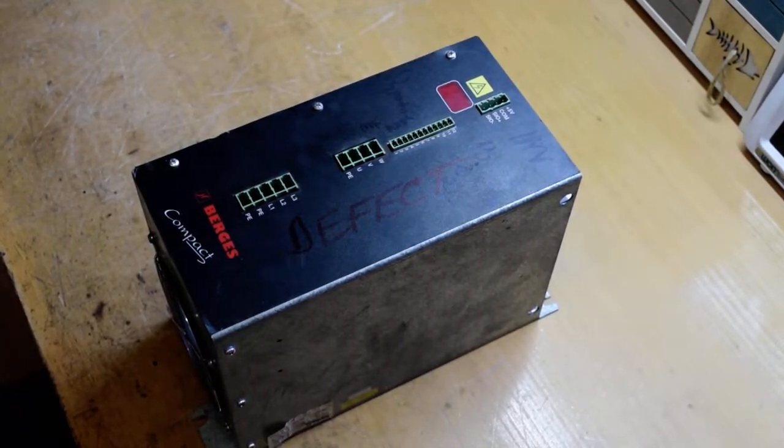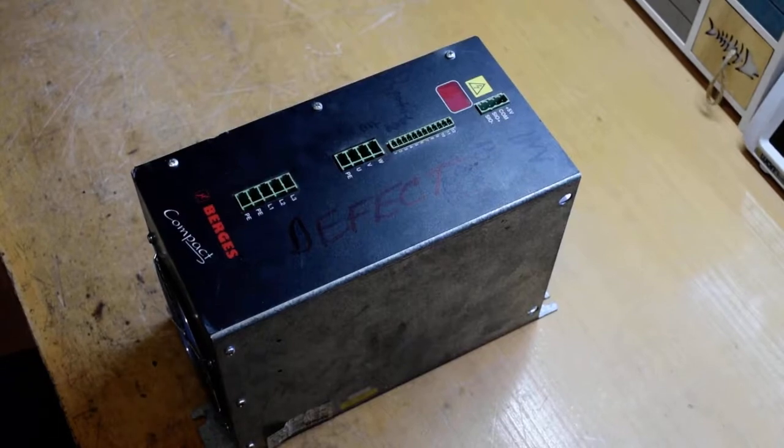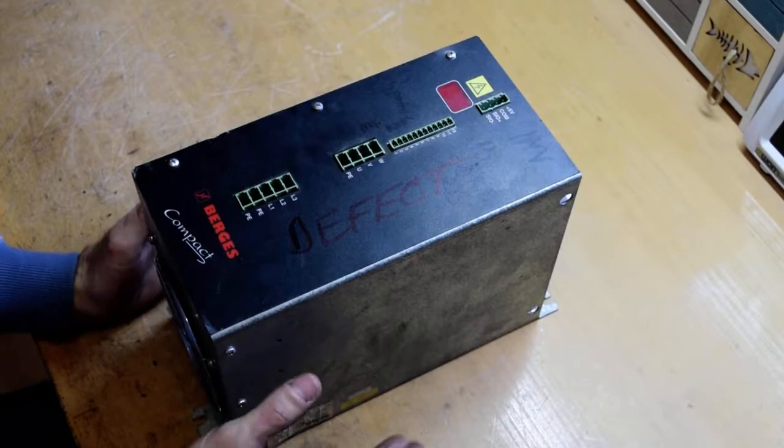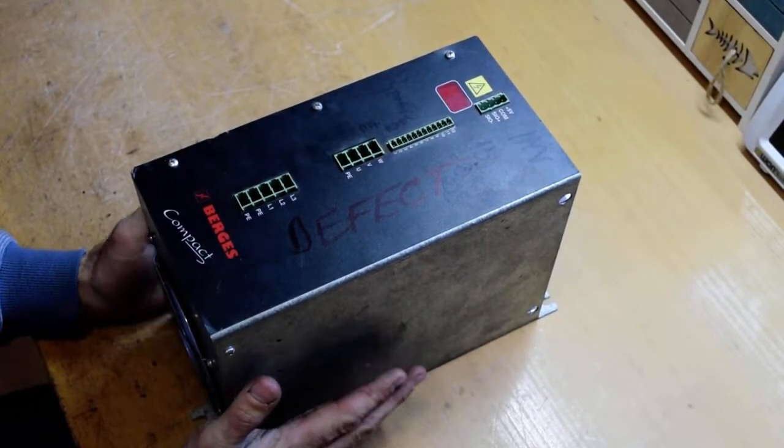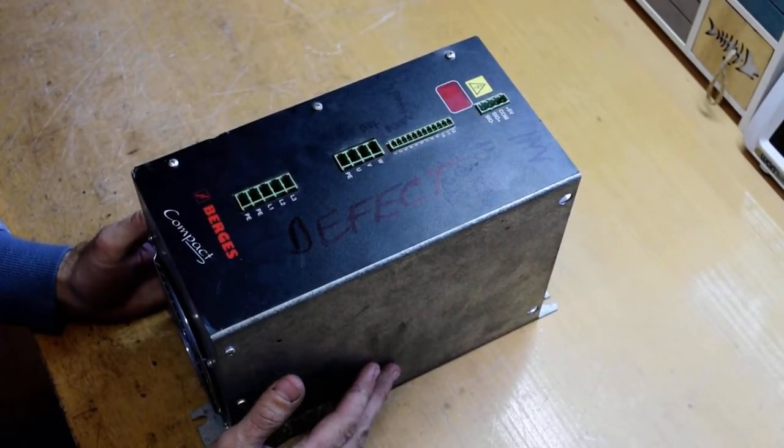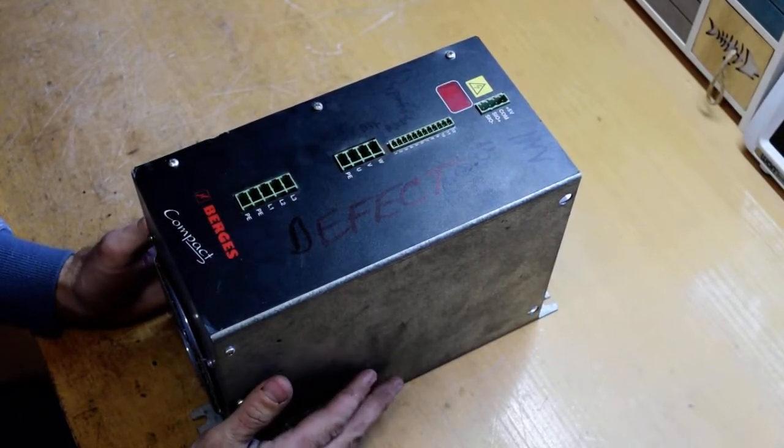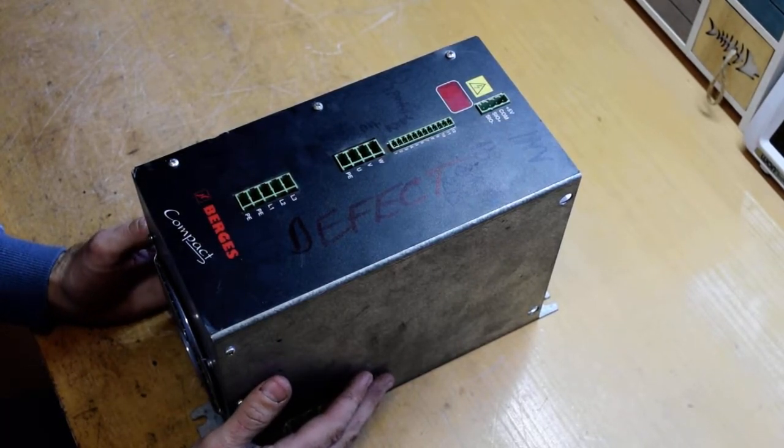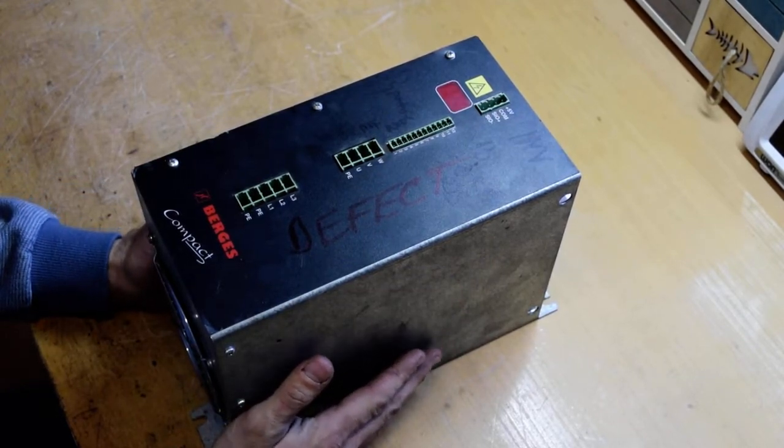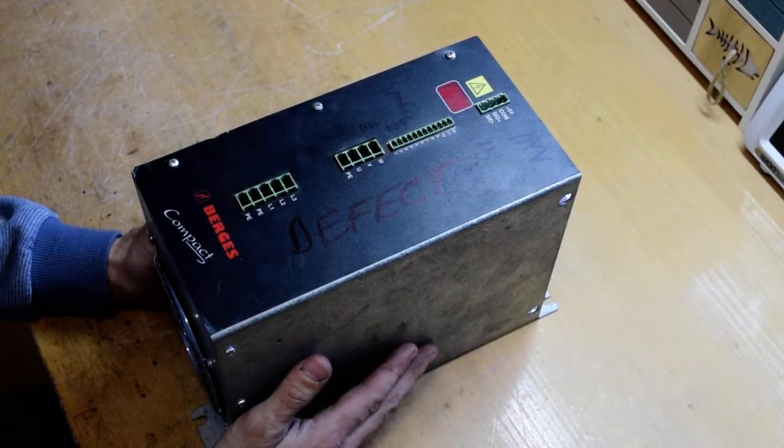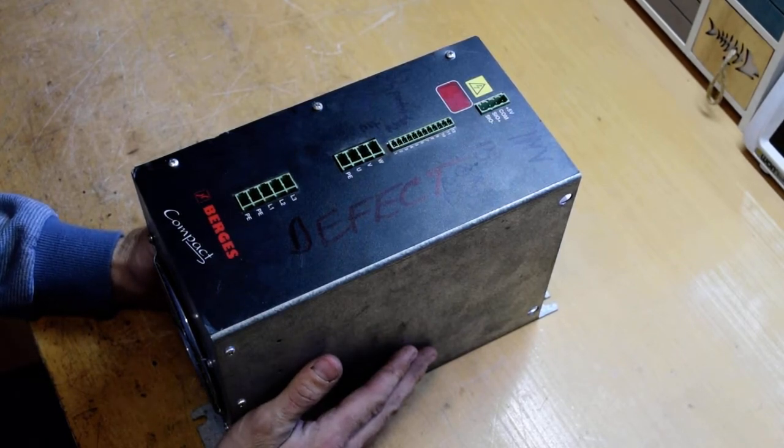Hello YouTube friends, welcome to another teardown of something very interesting. This is an inverter for controlling a 3-phase AC motor, 380 to 400 volts. This one is capable of 4 kilowatts and can deliver from 0 to 100 Hertz frequency.